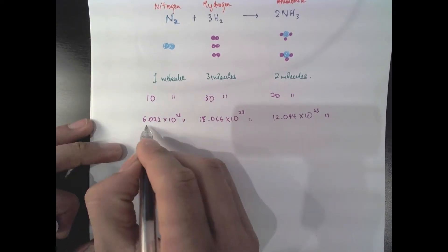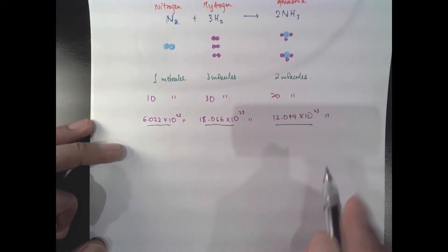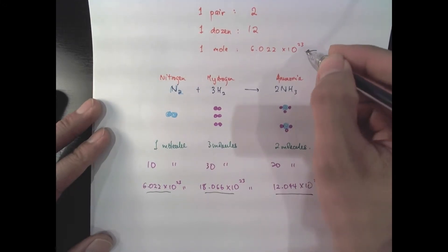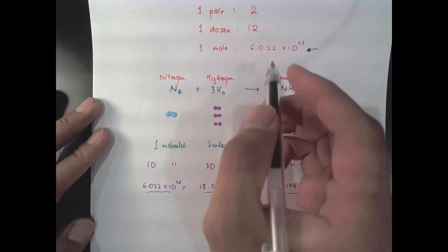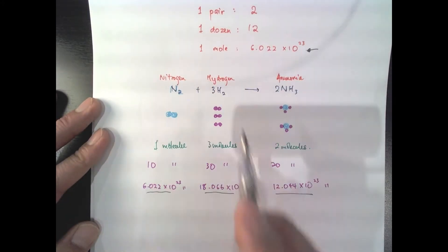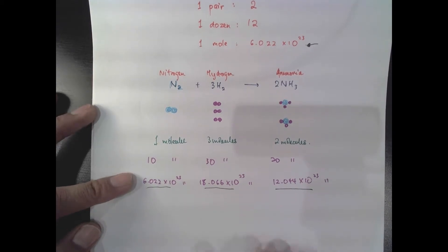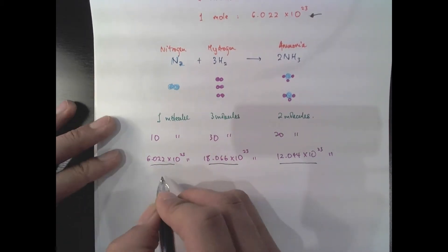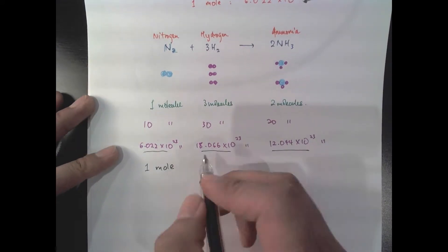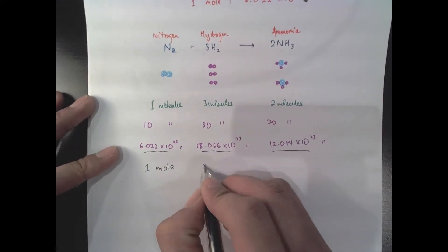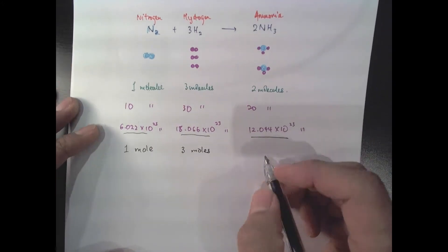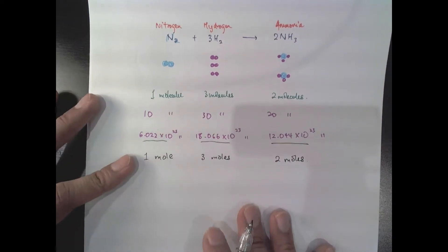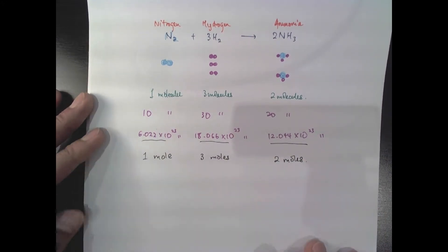Now this number is huge and unwieldy. So I like some convenient way of writing them down. And that's where the mole comes in handy because it so happens that I've chosen a number of molecules to represent one mole of nitrogen here. Instead of saying 6.022 times 10 to the 23, I could say one mole. And instead of saying 18.066 times 10 to the 23, I can say three moles. So a mole of nitrogen reacts with three moles of hydrogen to give two moles of ammonia.